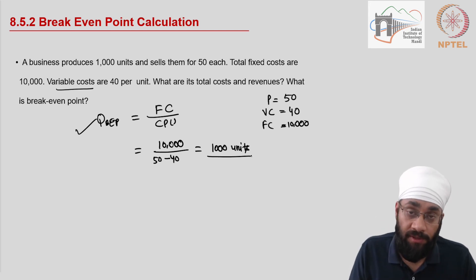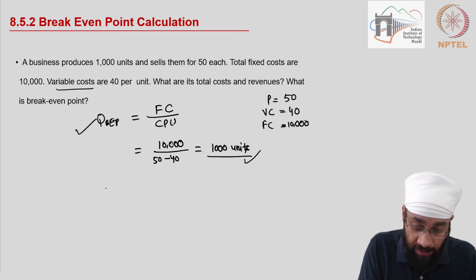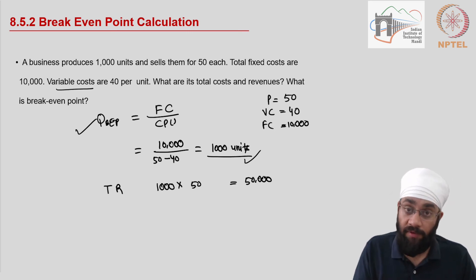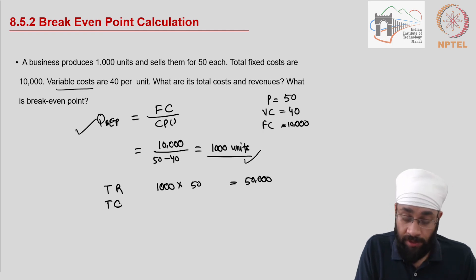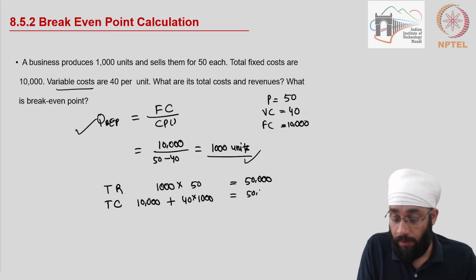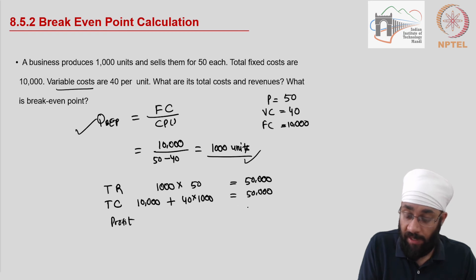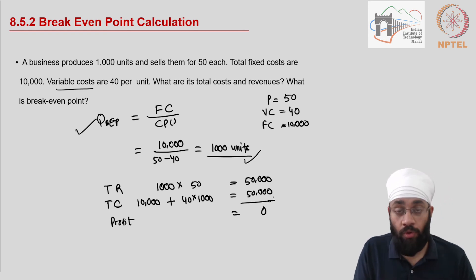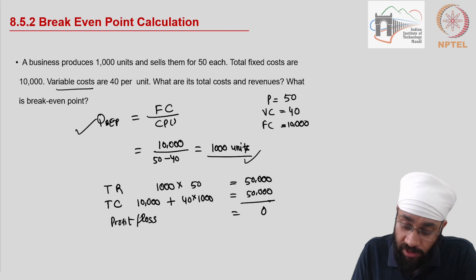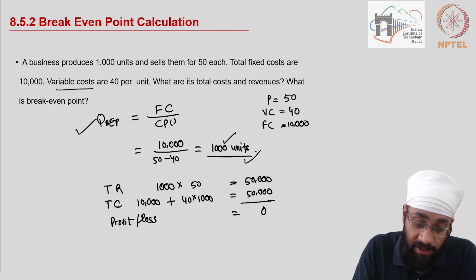Let's confirm whether this is true — whether at 1,000 units total revenues equal total cost. Total revenue = 1,000 units × 50 = 50,000. Total cost = fixed cost of 10,000 plus variable cost of 40 × 1,000 = 40,000, giving 50,000. So profit equals zero — no profit, no loss. At this scale of production, we have confirmed the break-even point.